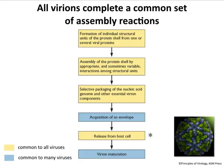All viruses go through a series of steps to make new virus particles. Many of them are in common, shown here in yellow: formation of the structural units, assembly of the shell by the interaction of these units, and then putting the nucleic acid genome inside the capsid. Some viruses get an envelope — not all are enveloped, but some do, shown in blue. And then release from the host cell.